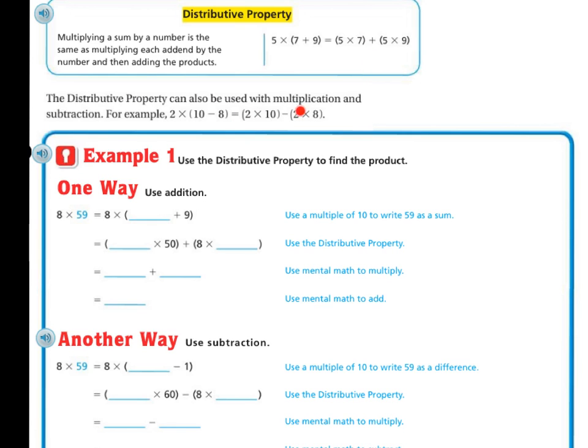So the distributive property can also be used with multiplication and subtraction. For example, 2 times the 10 minus 8 is the same thing as saying 2 times 10 and 2 times 8 and then subtracting what you get from both of those numbers.